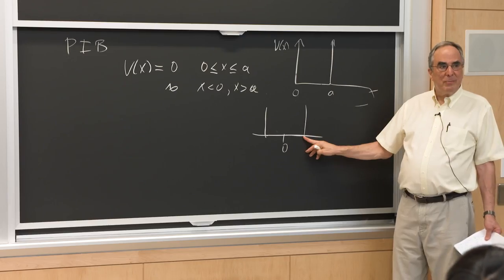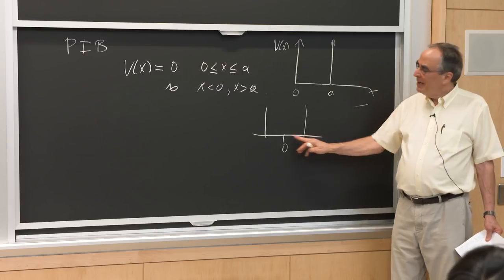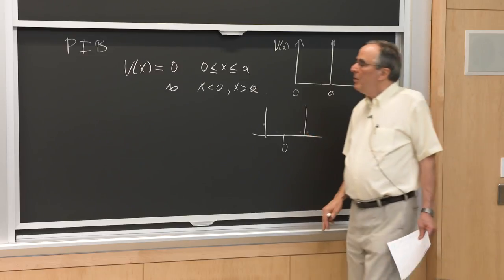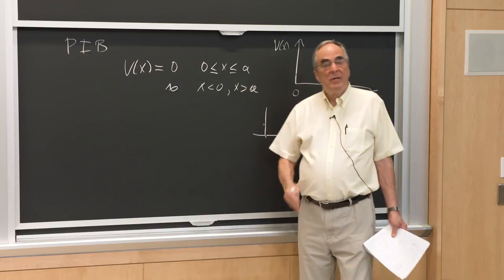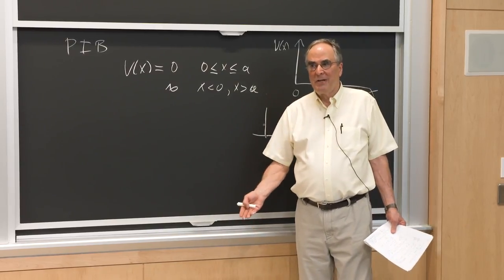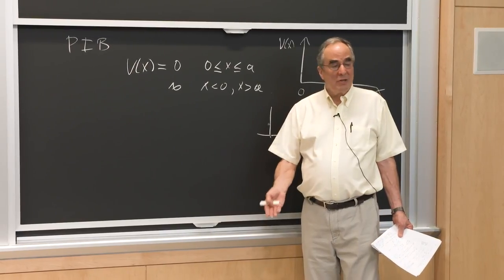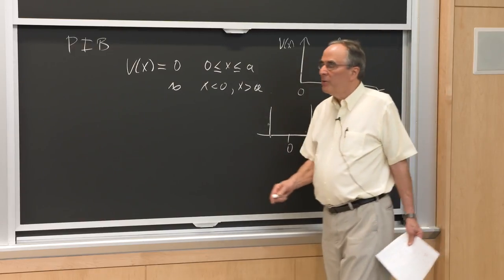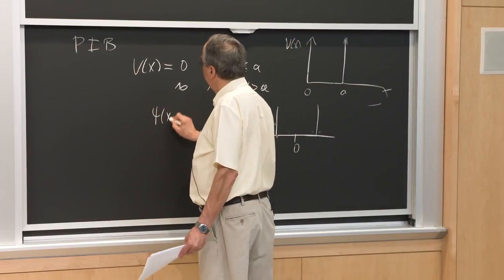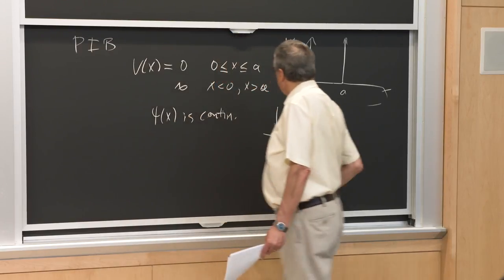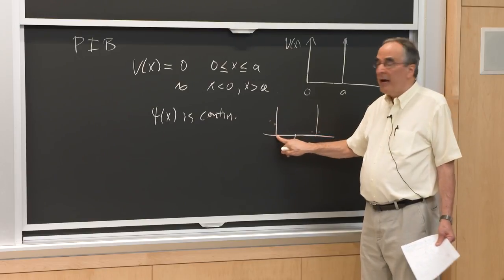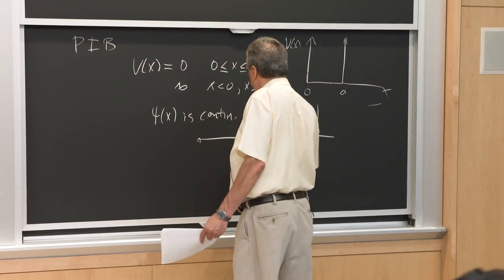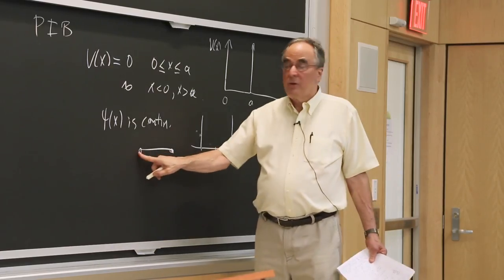Inside the box it looks like a free particle, but it can't be a free particle because there must be nodes at the walls. Outside the box the wave function has to be 0 everywhere — it's strongly classically forbidden. The wave function psi is continuous, so if it's 0 outside, it must be 0 at the walls. So the boundary conditions are: psi = 0 at each wall.